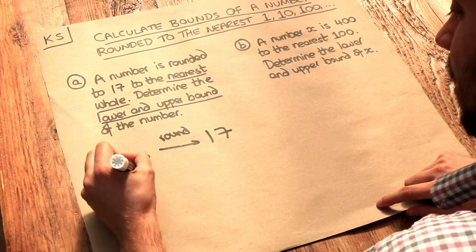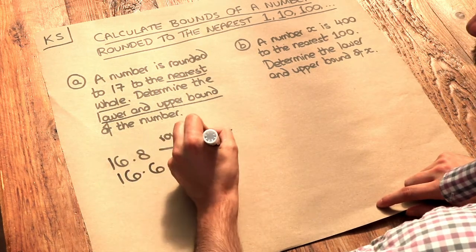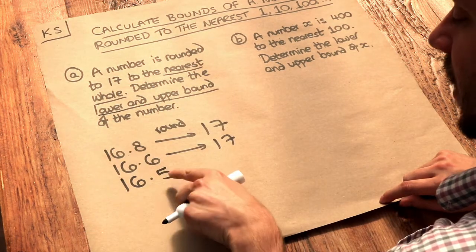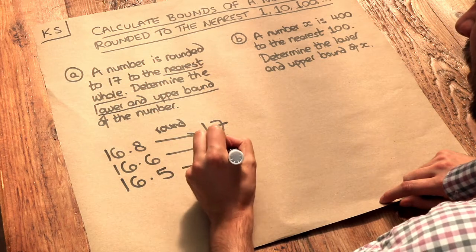Can we go lower? We could have 16.6, that would have rounded to 17. And in 16.5, well because that digit is 5 or more, that still rounds up to 17.